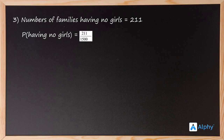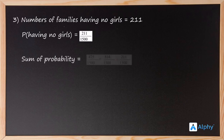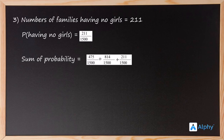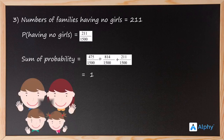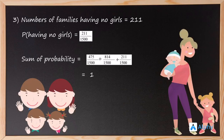We are asked to check whether the sum of all probabilities equals 1. The sum is 475 by 1500 plus 814 by 1500 plus 211 by 1500, which is equal to 1. This was all about the question — hope you understood, and thank you for your keen attention.